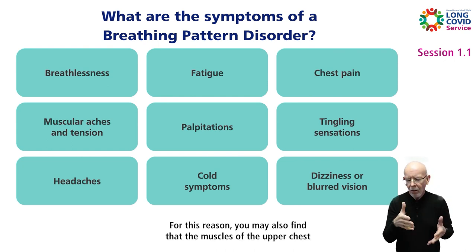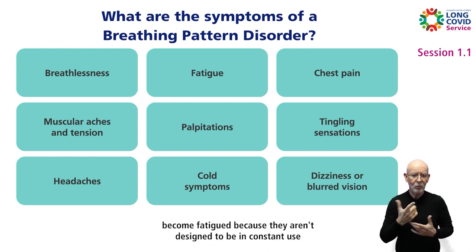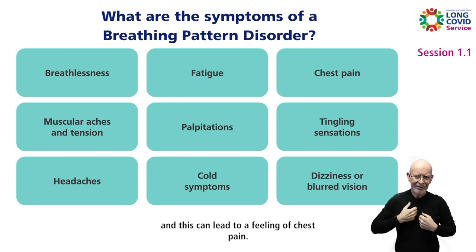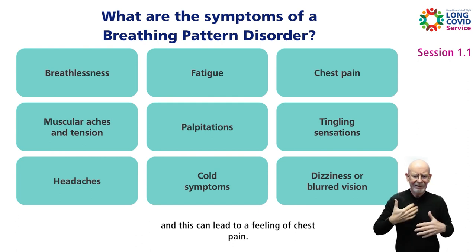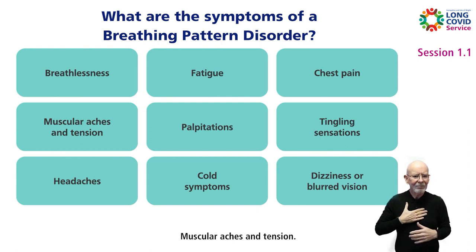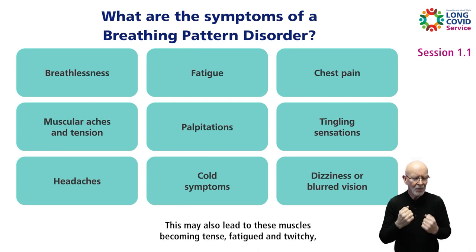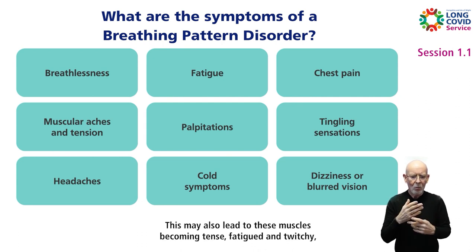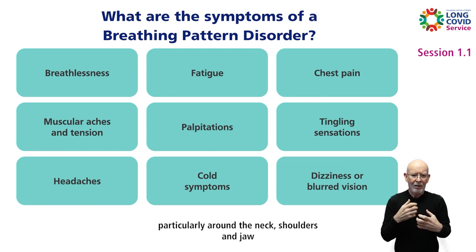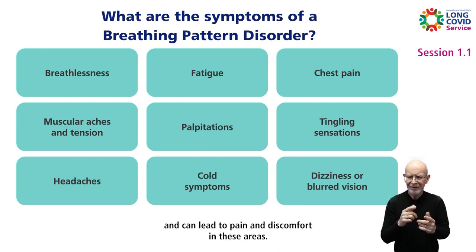Chest pain. You may also find that the muscles of the upper chest become fatigued because they aren't designed to be in constant use, and this can lead to a feeling of chest pain. Muscular aches and tension. This may also lead to these muscles becoming tense, fatigued and twitchy, particularly around the neck, shoulders and jaw, and can lead to pain and discomfort in these areas.